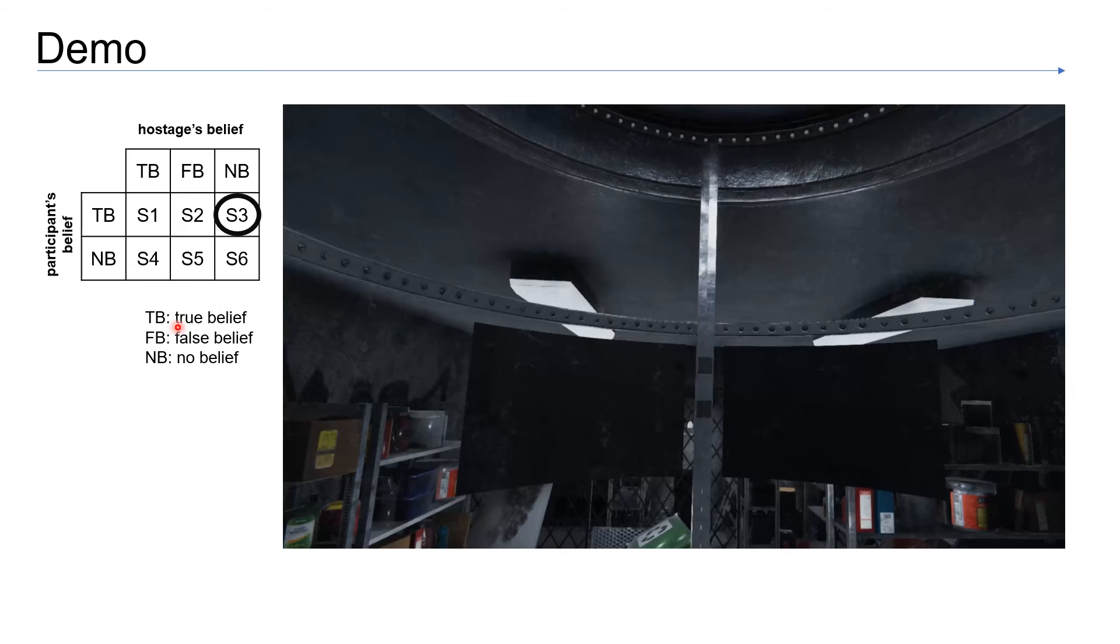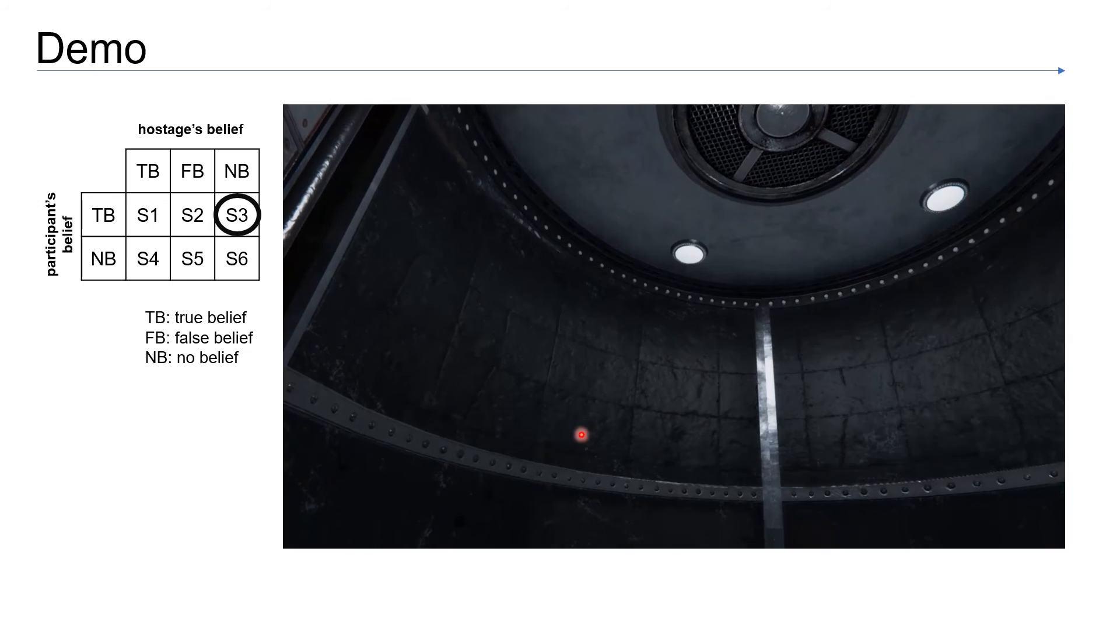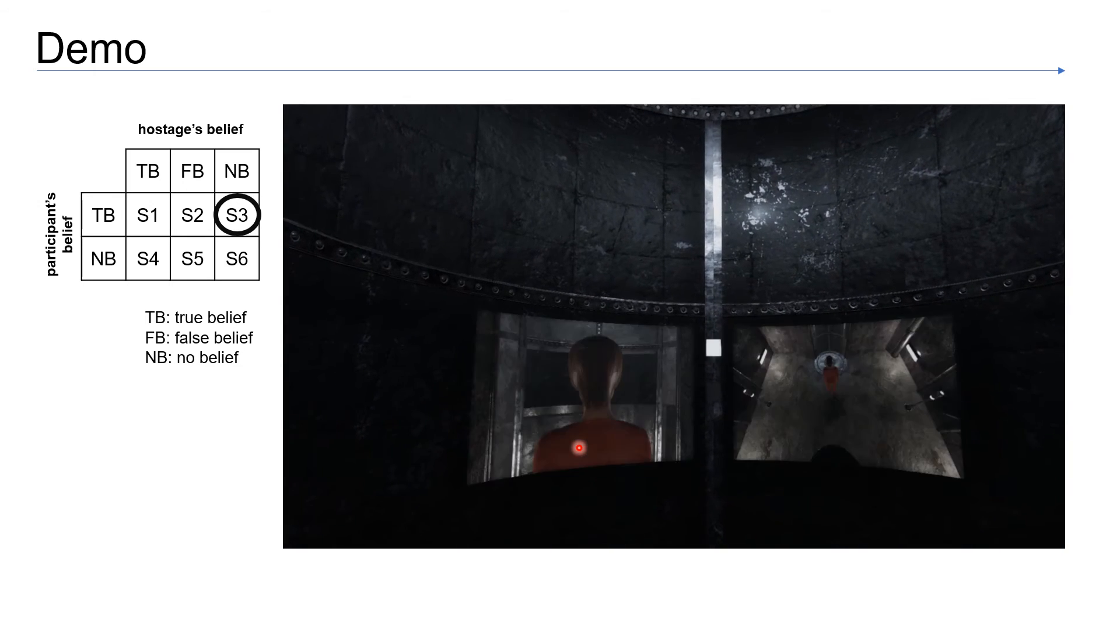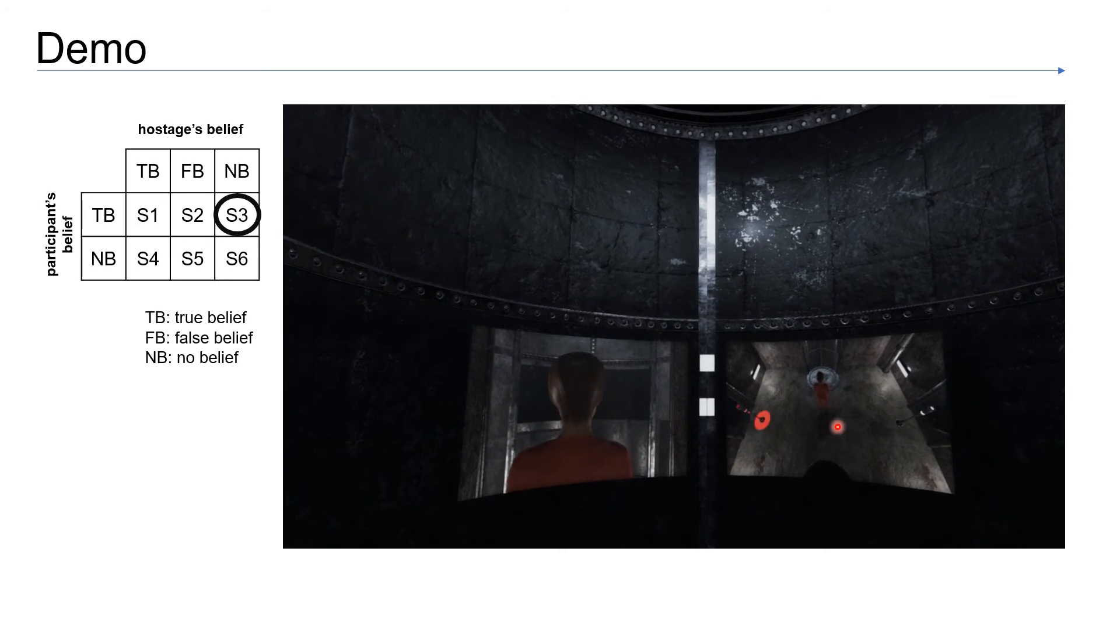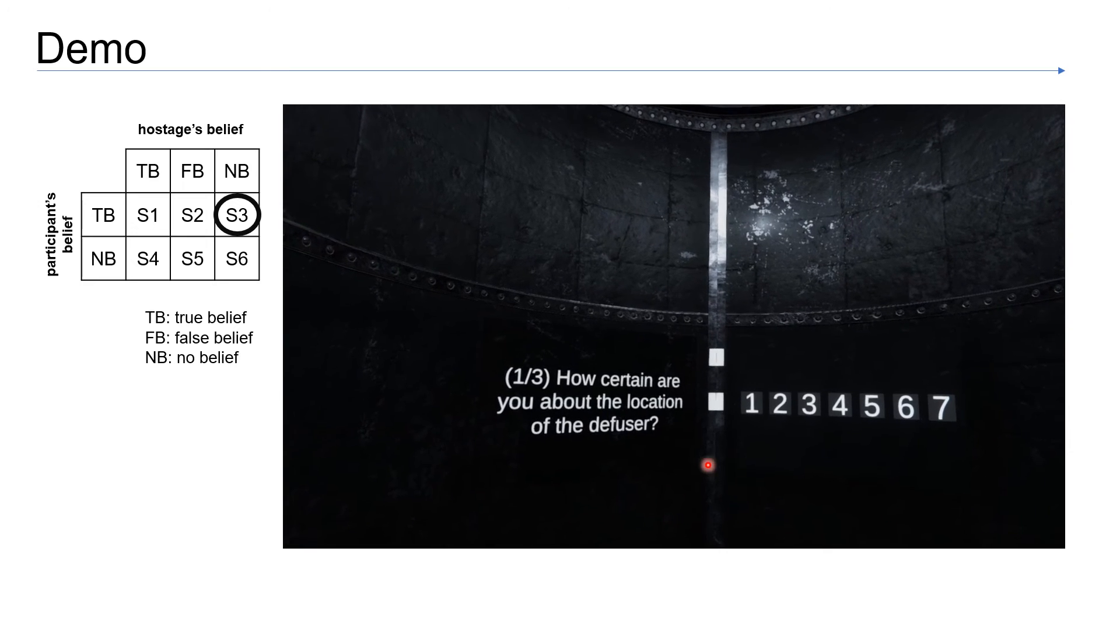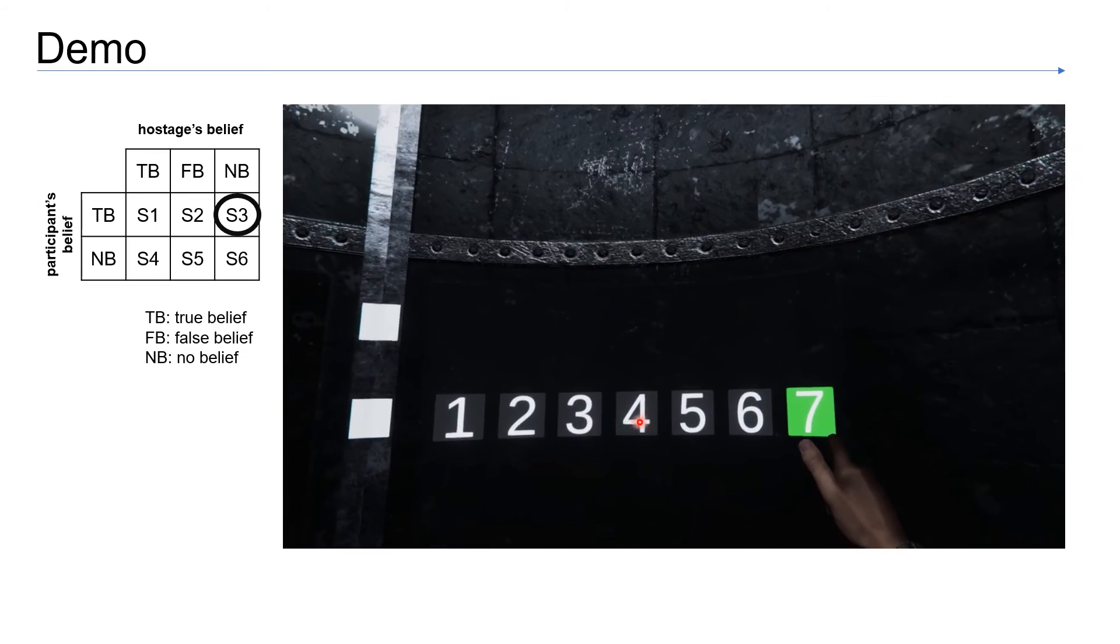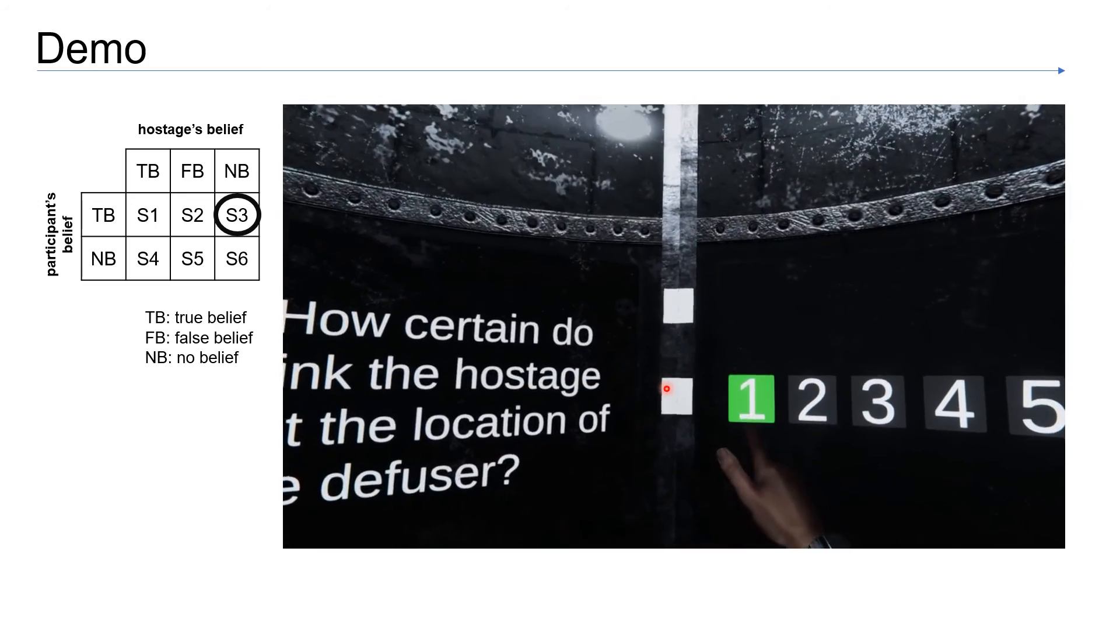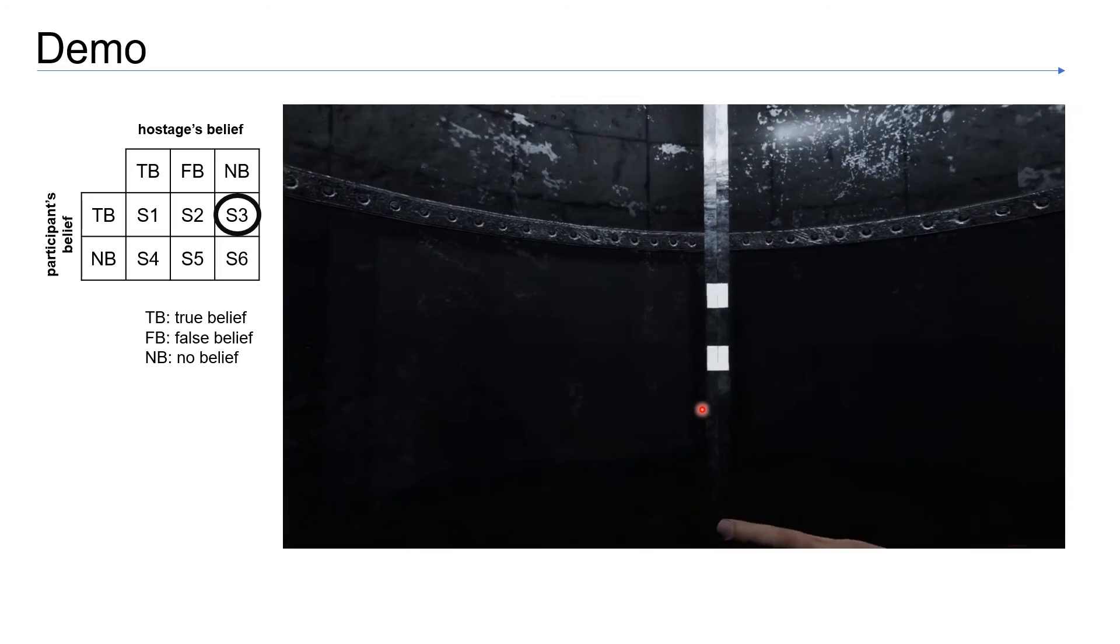Here is the first example. When the participant has a true belief, but the hostage has no belief about the position of the diffuser. In the left screen, you will see that the hostage is turning her back to the room, so she doesn't see the signal given behind her, and it changes from here to here. After that, the participant has to rate their confidence about the position of the diffuser, whether the hostage knows about the diffuser, and their stress level of accomplishing the task.